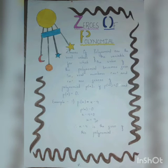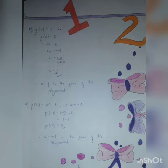And then comes Zeroes of Polynomial. Zeroes of Polynomial are the real value of the variables. And I have given some examples of Zeroes of Polynomial also.